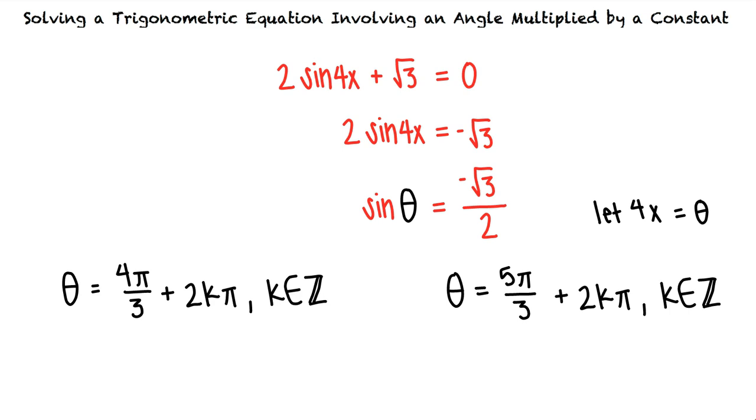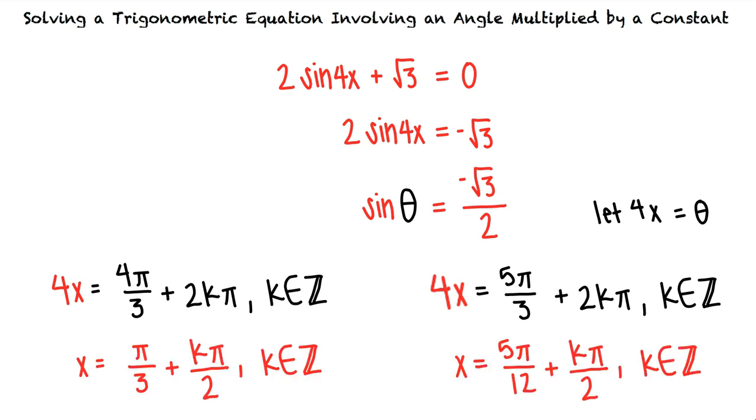Now we have to substitute 4x back into the equation for theta, right? That's right. When we isolate x, we see that x equals pi thirds plus k pi halves, k element z, and x equals 5 pi twelfths plus k pi halves, k element z.